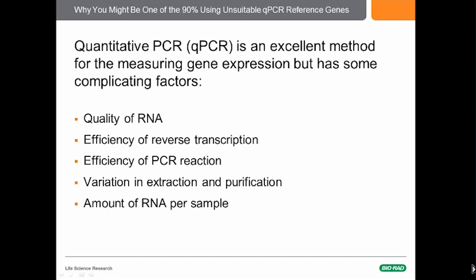There's the quality of RNA — most of you know to run gels or to use a chip system like the Experion to test the quality of your RNA. There is the efficiency of the reverse transcription, the efficiency of the PCR reaction itself, and variations in extraction and purification of the sample material. Finally, it boils down to the amount of RNA per sample. We need to be able to differentiate actual differences in gene expression from simple variation in starting material, and that's why we use a reference gene.